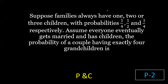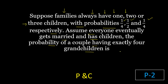In this problem, suppose families always have 1, 2, or 3 children with probabilities 1/4, 1/2, and 1/4 respectively. Assume everyone eventually gets married and has children. Then the probability of a couple having exactly 4 grandchildren will be asked.